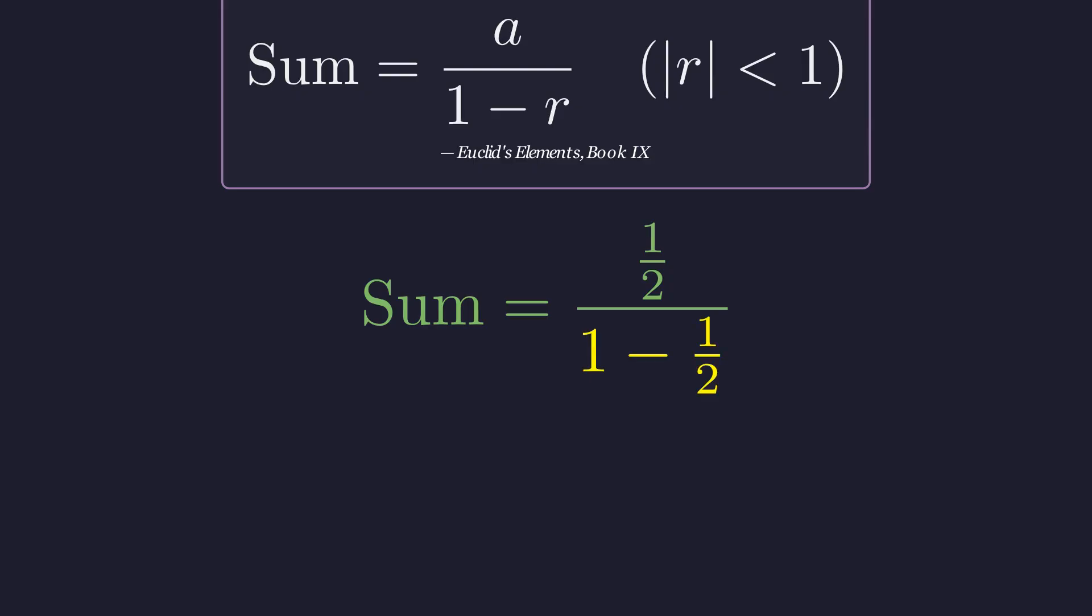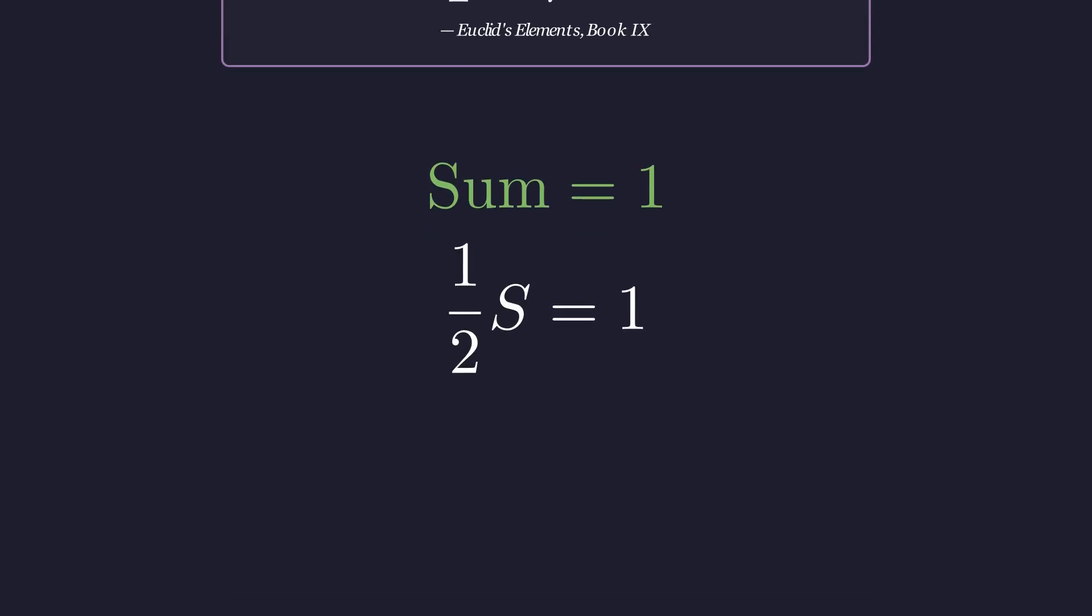Let's simplify the denominator. One minus one-half is one-half. One-half divided by one-half is one. So one-half s equals one, which means s equals two.